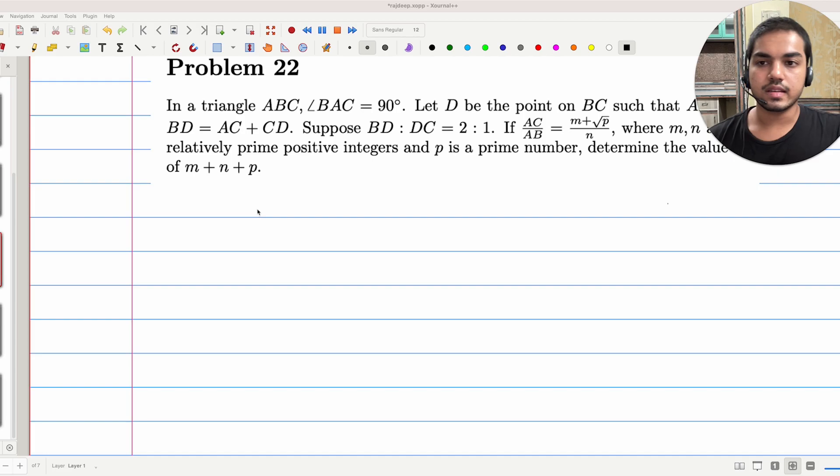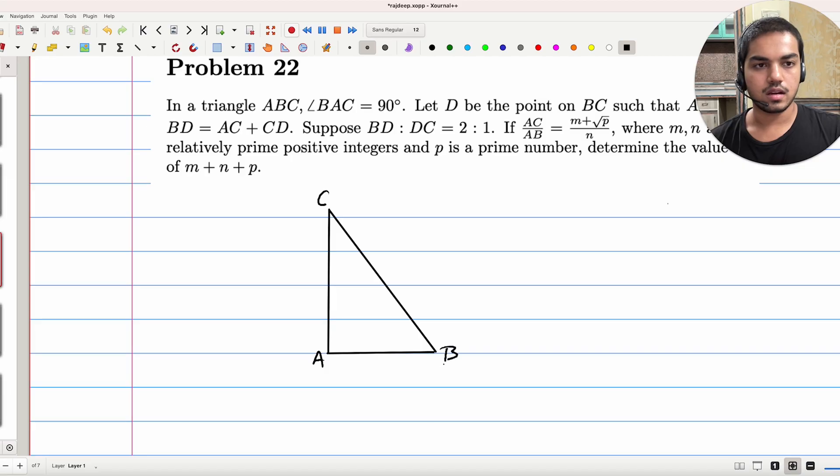So in this problem, we are given a right triangle ABC with the right angle at A. Right, let's see what else the problem says. D is a point on BC, such that AB plus BD is equal to AC plus CD.